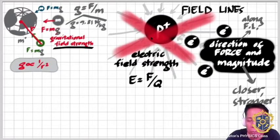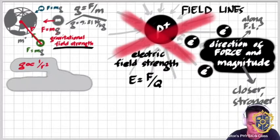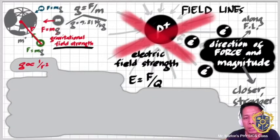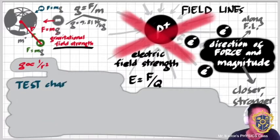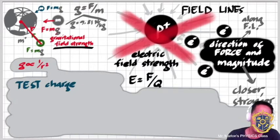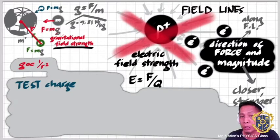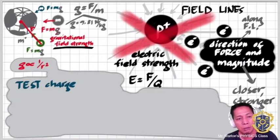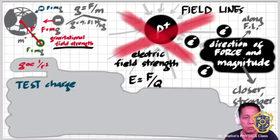I want to set that aside for now and look at the so-called test charge. The test charge is used for convention — to determine what direction field lines should be drawn around a positively or negatively charged particle. For convention, a test charge is a positive point charge.